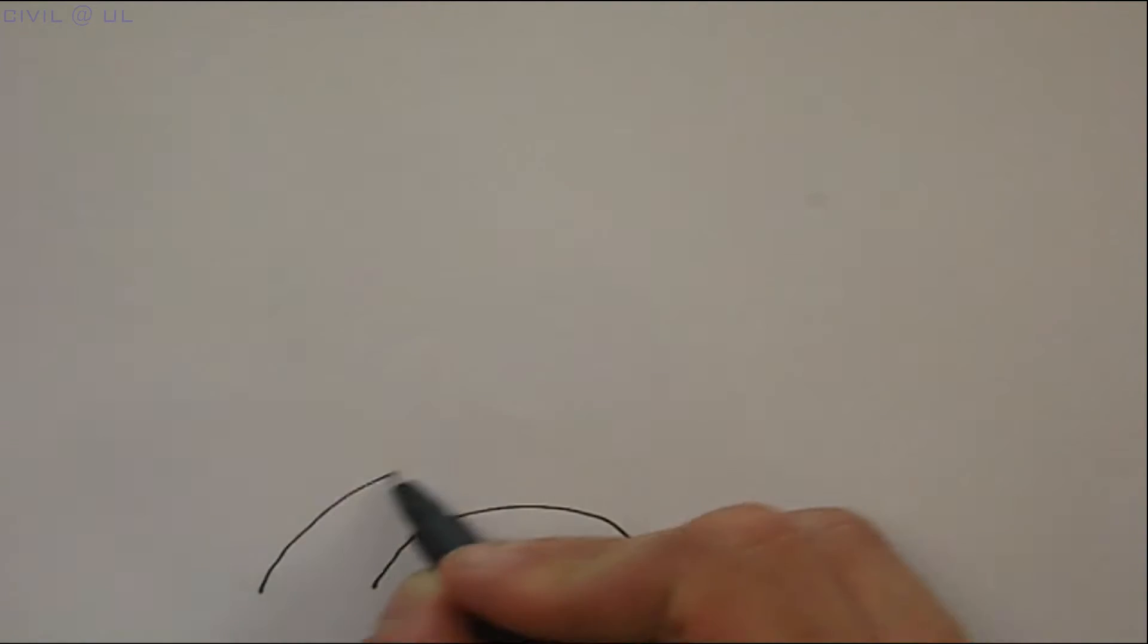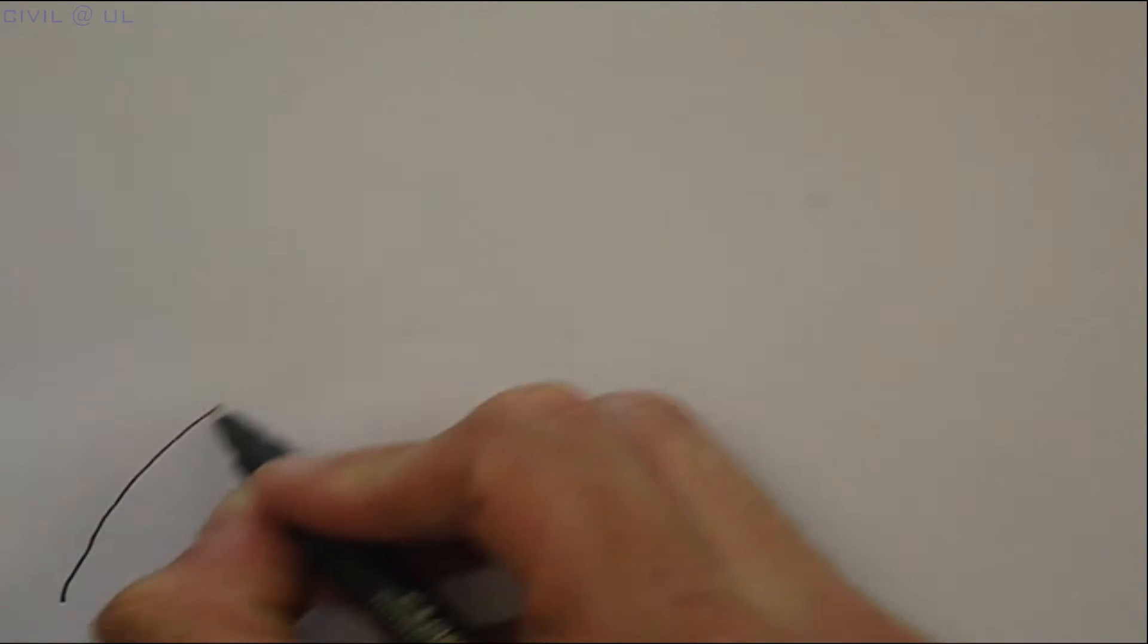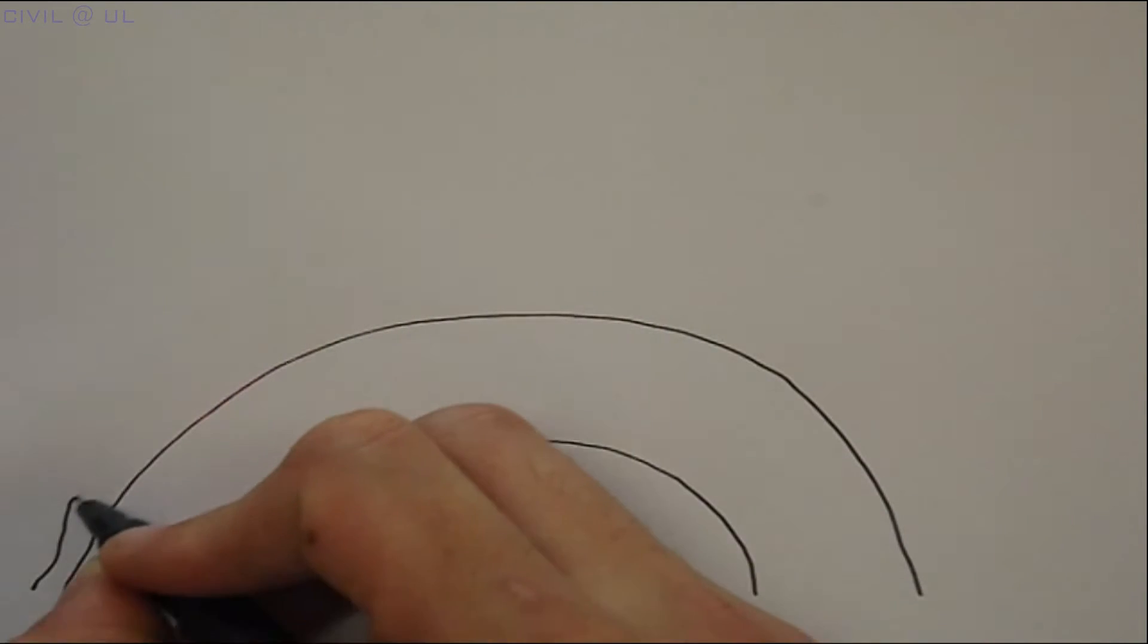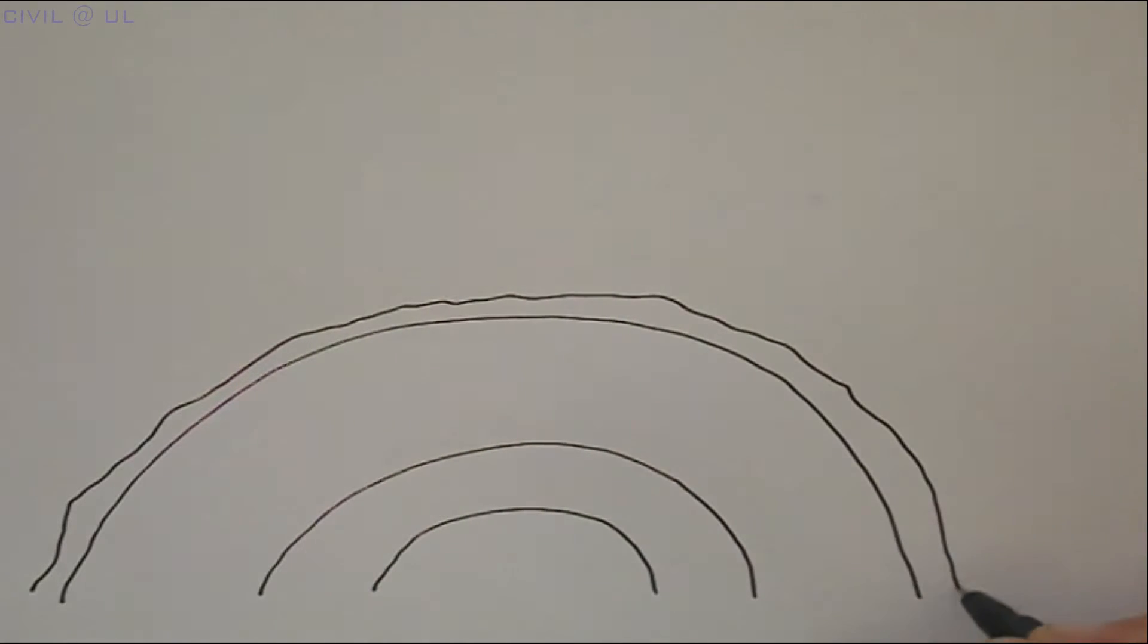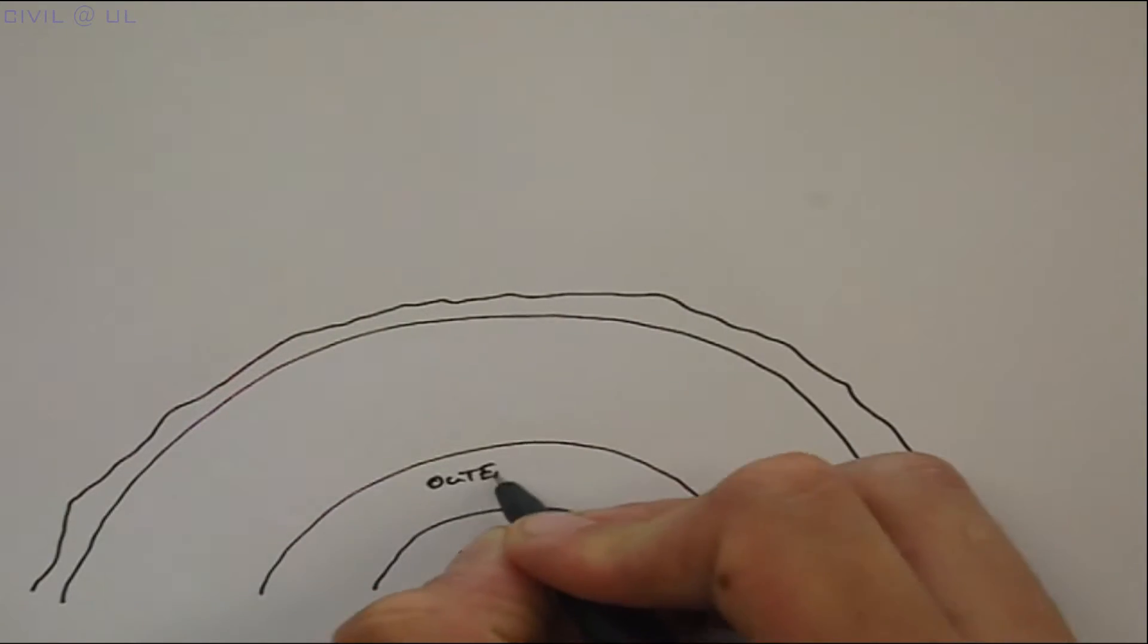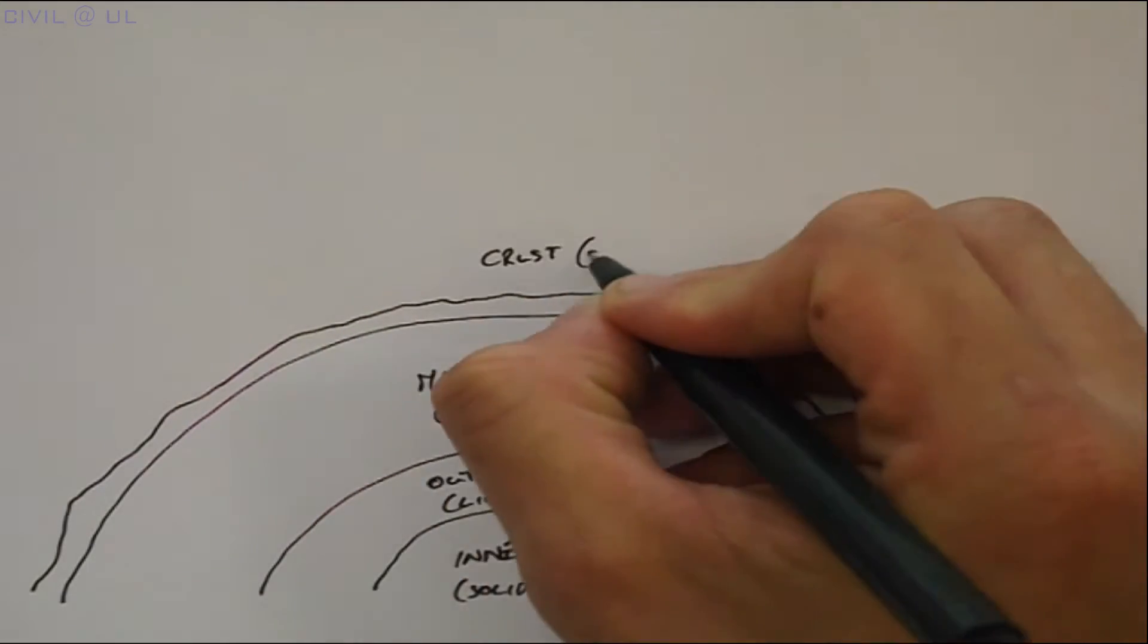Looking at the Earth's structure, it comprises a series of spherical shells, much like an onion. This can be broken down into four distinct layers: the inner core, outer core, mantle, and crust.